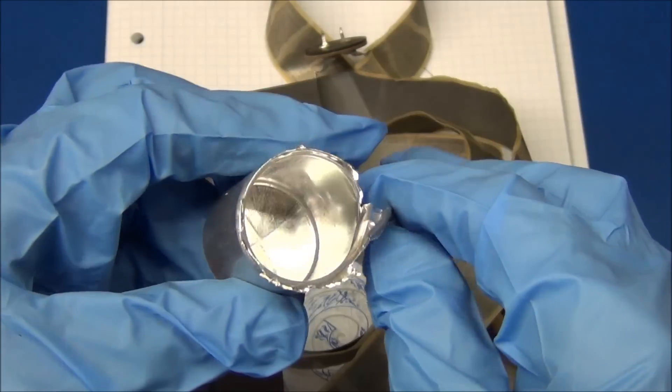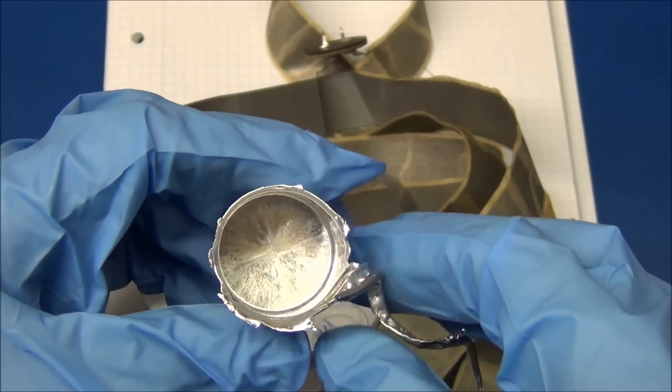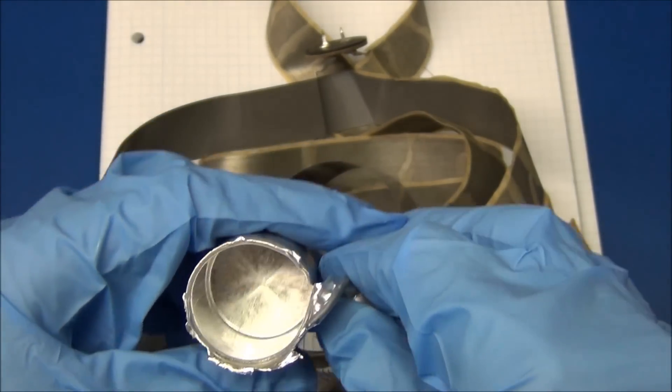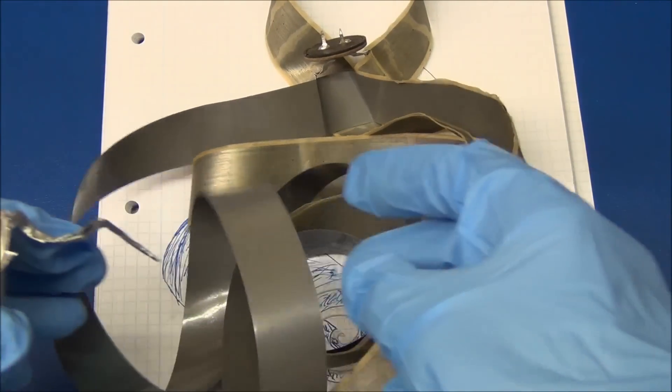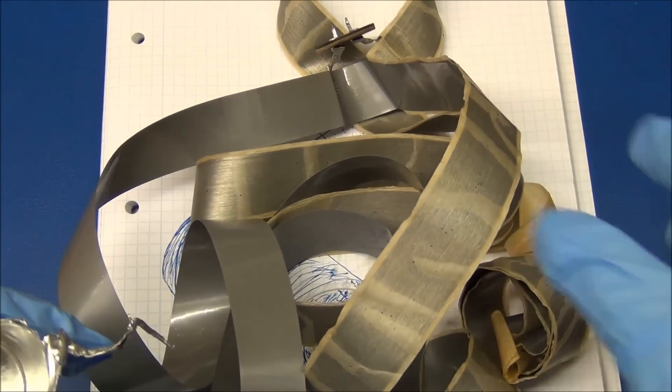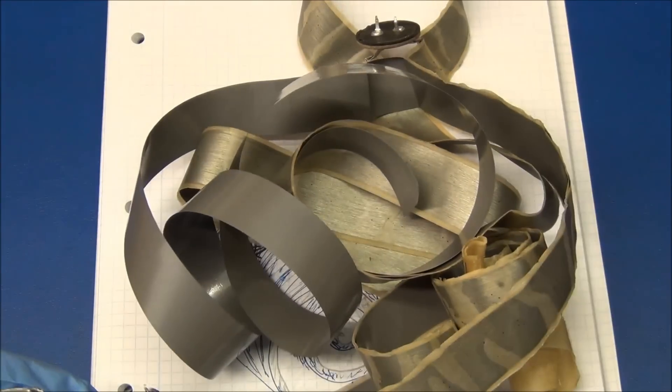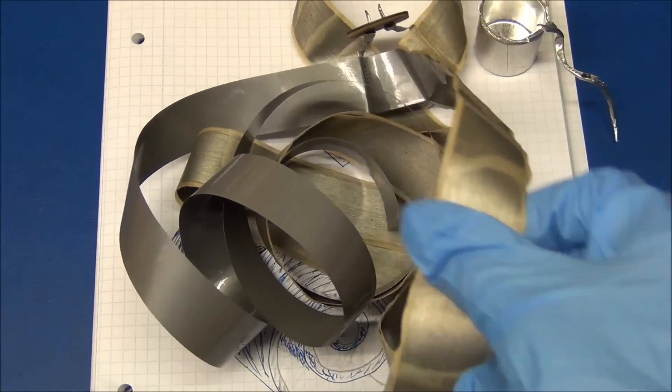That was just a small tear down of a capacitor. I hope you liked it even though there wasn't much interesting inside. Just a pile of aluminium foil and a can and some paper. And some electrolyte. But I'll try to measure this up. There is a good length of it.